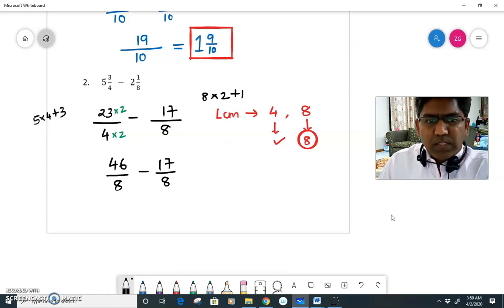Now I have like fractions. So I will simply subtract. So the denominator will be 8. 46 minus 17 will give me 29/8. Now let's see if you can reduce it further. It is not possible.